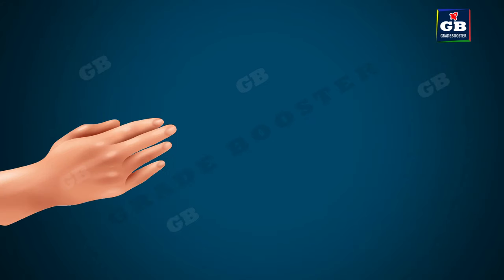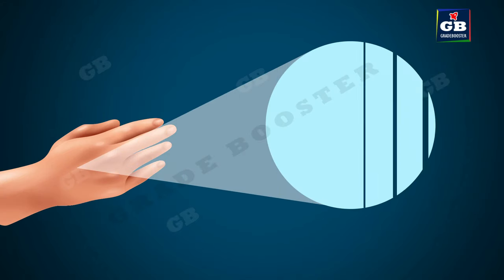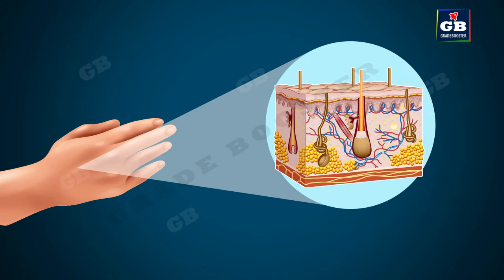Not only the internal parts, our body's external surface is also covered by a kind of epithelium — that is our skin. So skin is also a kind of epithelium.